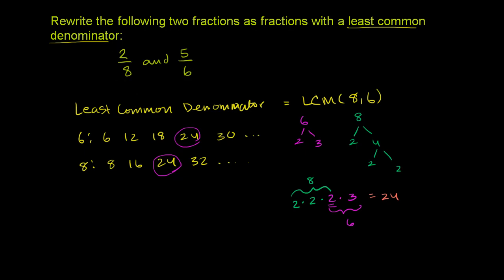So what we want to do is rewrite each of these fractions with 24 as the denominator. So I'll start with 2 over 8. And I want to write that as something over 24. Well, to get the denominator to be 24, we have to multiply it by 3. 8 times 3 is 24.